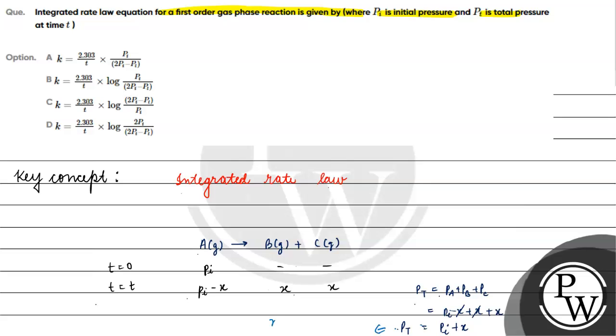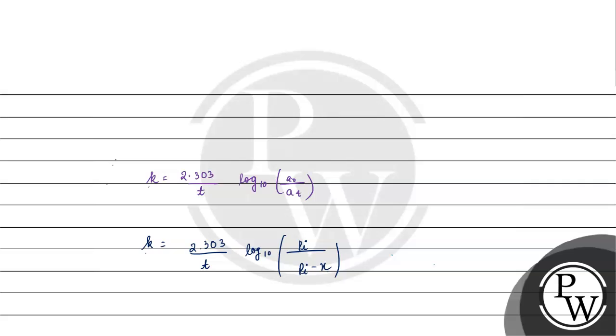We have x equals pt minus pi. Here we have 2.303 by t log base 10 pi by pi minus pt minus pi, which is 2.303 by t log base 10 pi by pi minus pt plus pi. This simplifies to 2.303 by t log base 10 pi by 2pi minus pt.